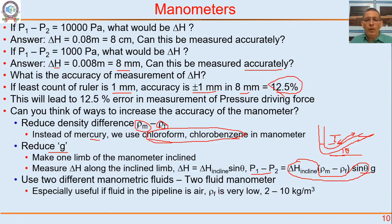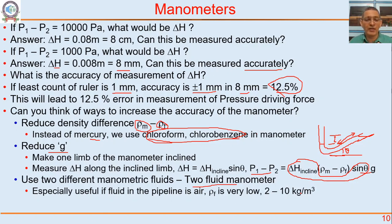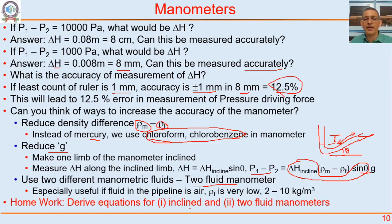A third method is a two-fluid manometer — using two different manometric fluids with a small density difference, such as chlorobenzene and water or chloroform and water. This is especially useful when the pipe fluid is air (density 2–10 kg/m³), where even water in the manometer still has a density difference of ~1000, making small pressure differences hard to measure. With two fluids whose density difference is only a few hundred, accuracy improves significantly. Homework: derive equations for the inclined manometer and two-fluid manometer using textbooks such as Fluid Mechanics by Frank White, Transport Phenomena by Bird, Stewart and Lightfoot, or Fundamentals of Momentum, Heat and Mass Transfer by Welty and Wicks.